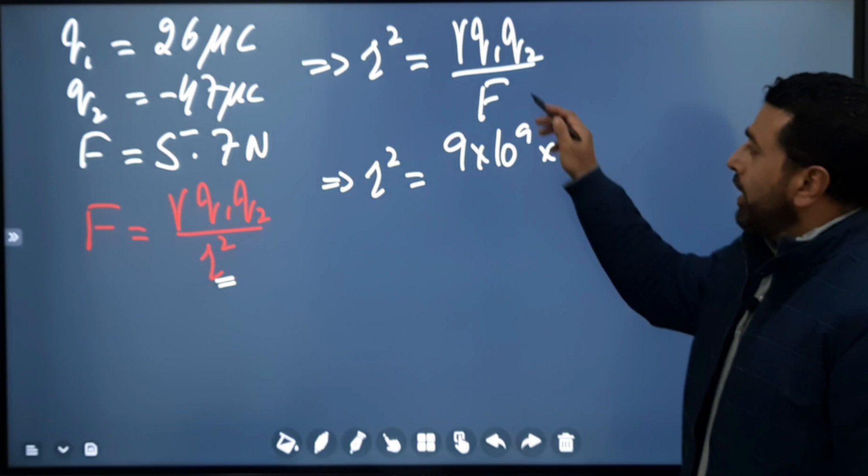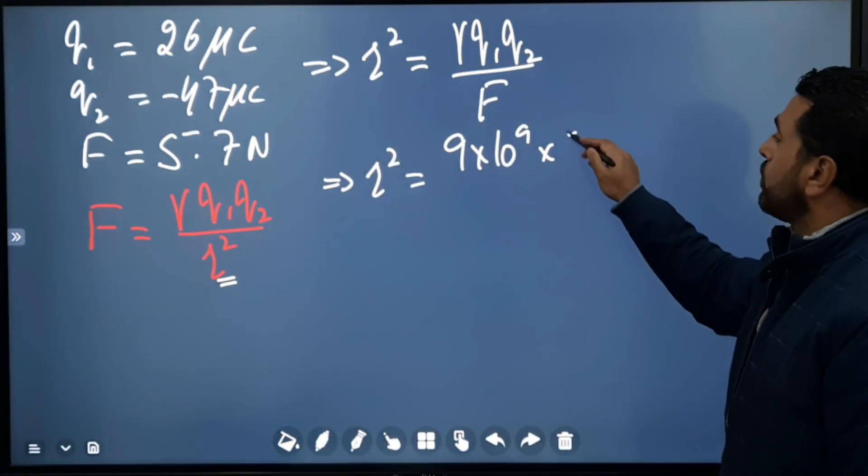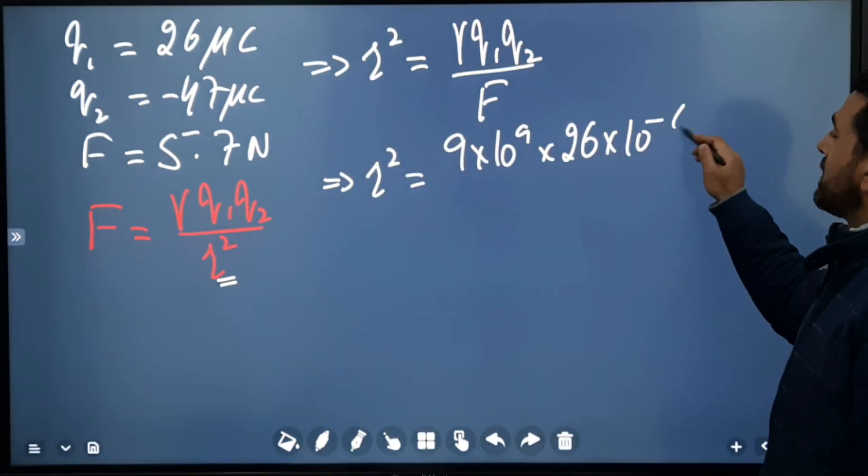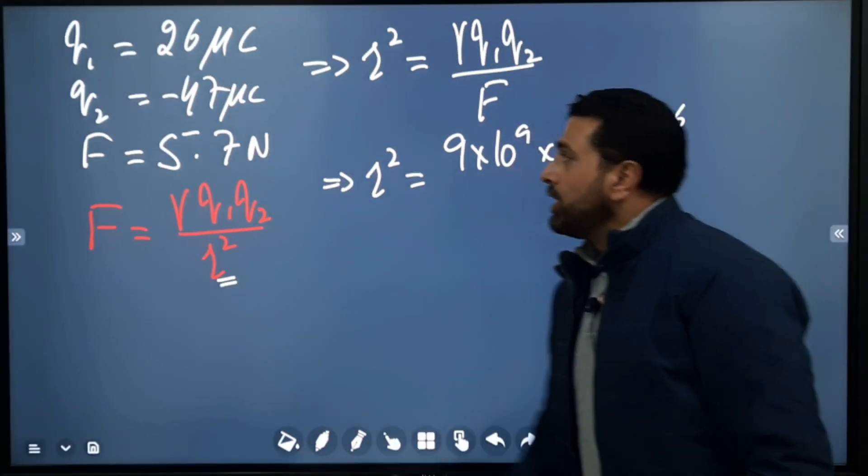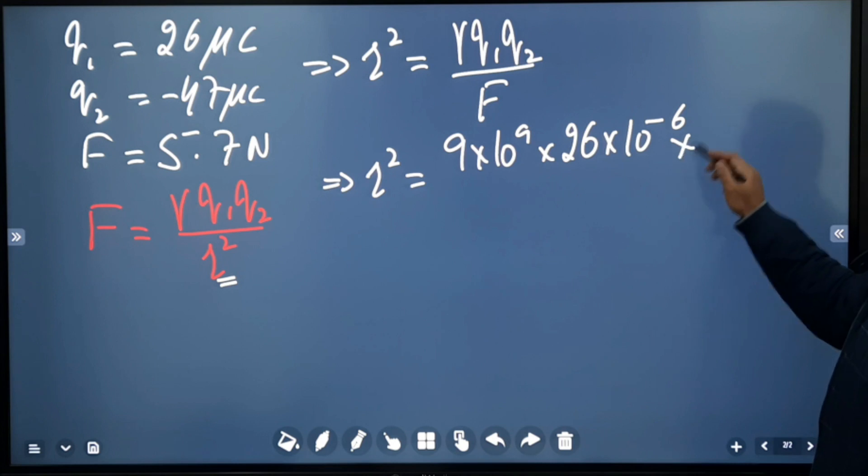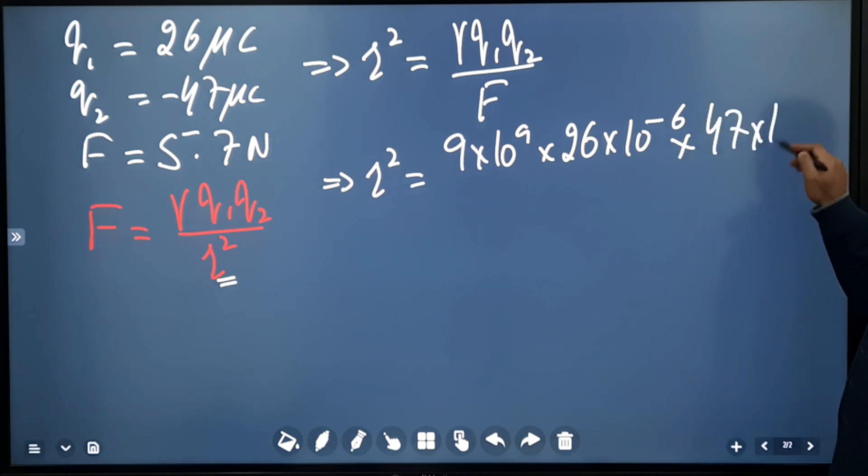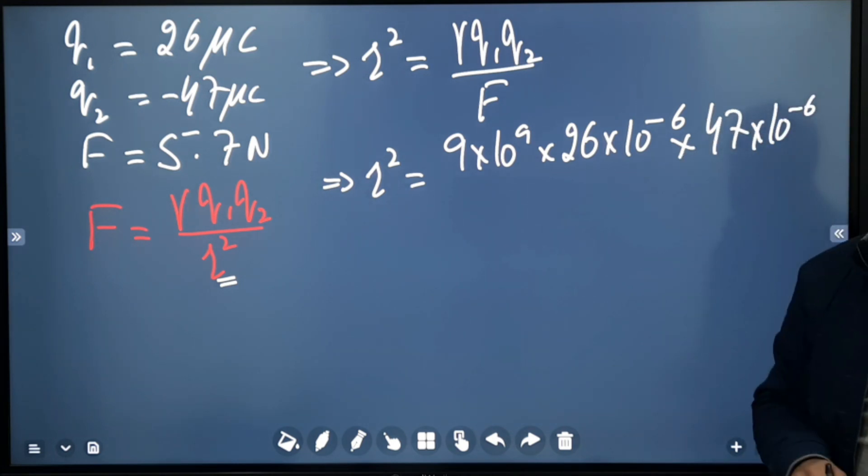Times q1, which is 26 microcoulombs, so 26 × 10⁻⁶. Micro is 10⁻⁶. Then q2 is 47 microcoulombs, so 47 × 10⁻⁶.